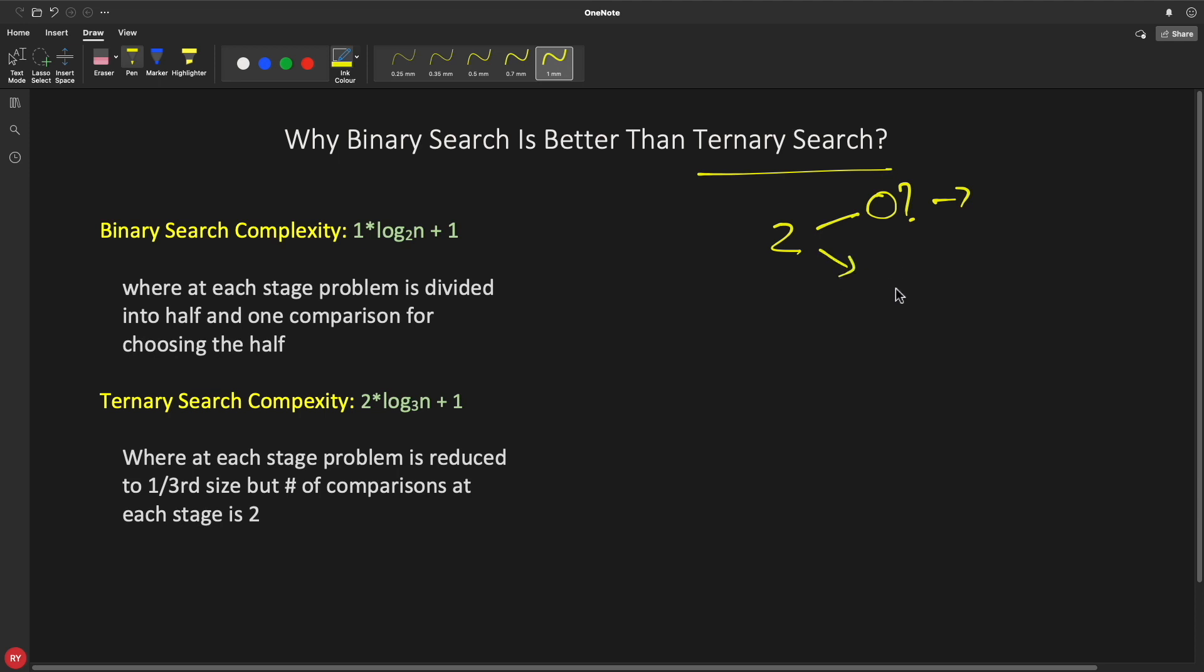So there are two comparisons. Whereas in ternary search you have four comparisons.